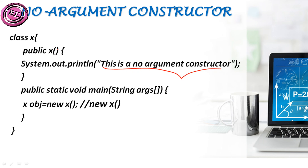You may think that default constructor and no-argument constructor are the same, but the main difference is: in a no-argument constructor we can print some data, but in a default constructor we cannot. I hope you understood — in a no-argument constructor we are not giving any arguments, but we can print some data, whereas in a default constructor we cannot.